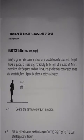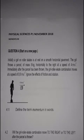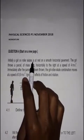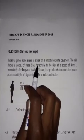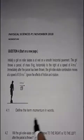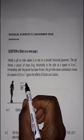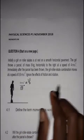This question carries 40 marks, so I'm expecting to spend 40 minutes explaining it. The question says: initially a girl on roller skates is at rest on a smooth horizontal pavement. The girl throws a parcel of mass 8 kg horizontally to the right at a speed of 4 m/s. That thrown parcel represents our initial velocity.